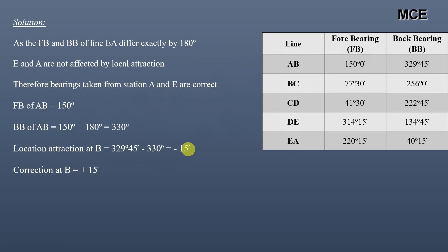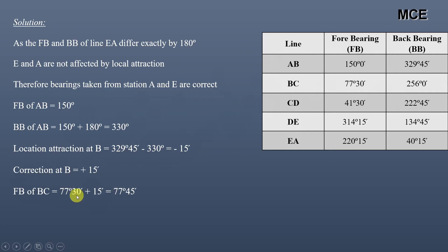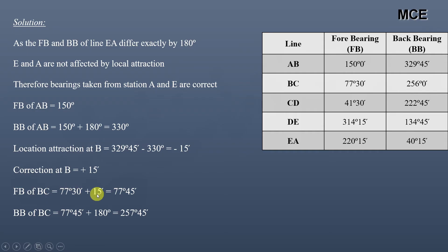The error at station B is minus 15 minutes, so the correction at station B will be plus 15 minutes. The correct fore bearing of line BC will be the observed fore bearing plus the correction: 77°30' plus 15' equals 77°45'. The correct back bearing of line BC will be the correct fore bearing plus 180 degrees, because the fore bearing is less than 180 degrees. So the correct back bearing of line BC is 77°45' plus 180°, which equals 257°45'.